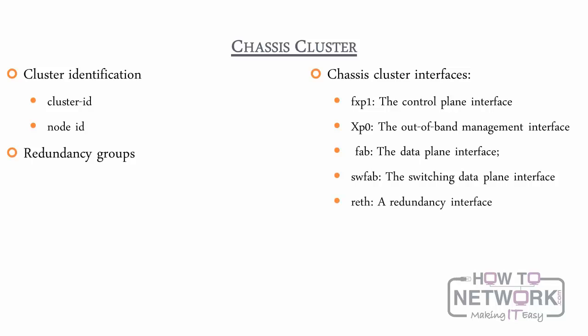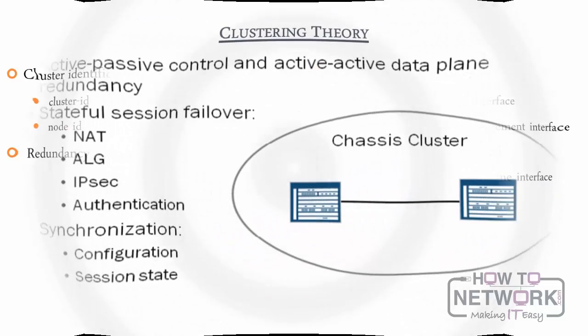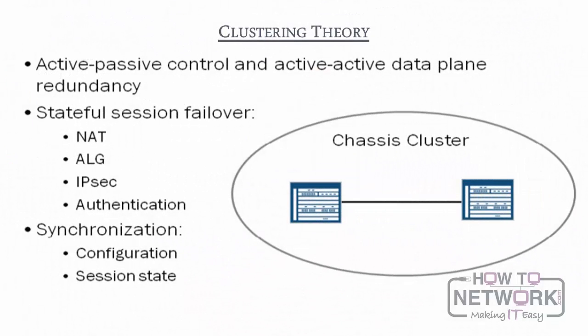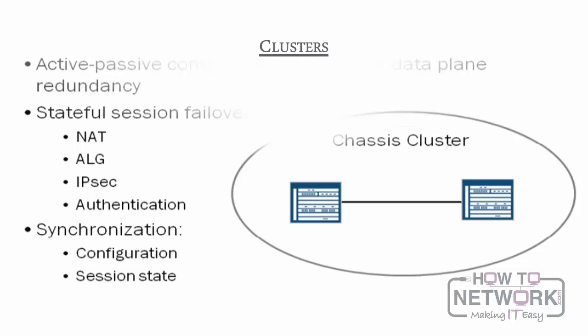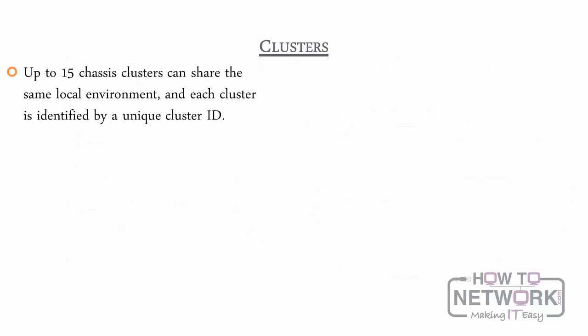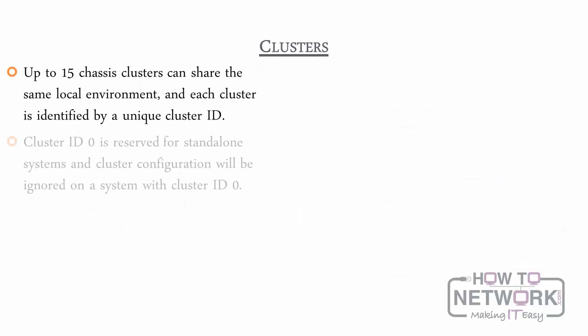Up to 15 chassis clusters can share the same local environment, and each cluster is identified by a unique cluster ID. Cluster ID 0 is reserved for standalone systems and cluster configurations will be ignored on a system with a cluster ID of 0.